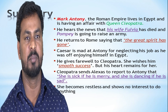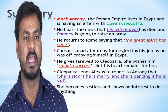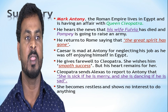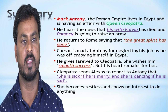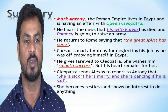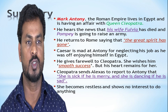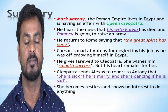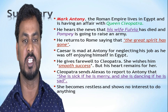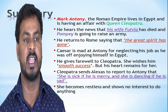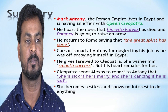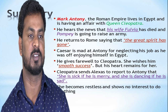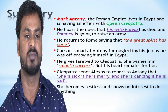Mark Antony, the Roman ruler, lives in Egypt and is having an affair with Cleopatra. He hears the news that his wife Fulvia has died, and that Octavius is going to raise an alarm. He returns to Rome, saying that the great strength of duty calls him back. Caesar is angry at Antony for neglecting his job while enjoying himself in Egypt. He gives power to Cleopatra, who uses her charms and sweet senses to keep him. But his duty remains ever-present.